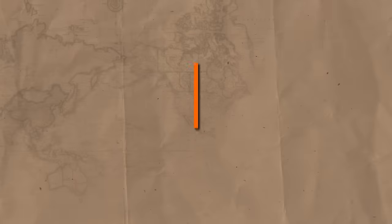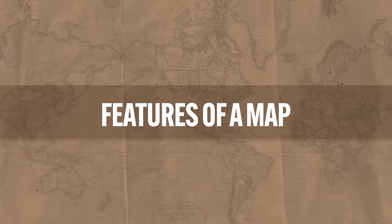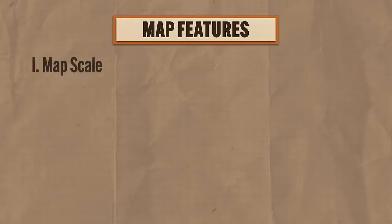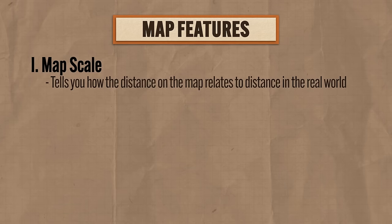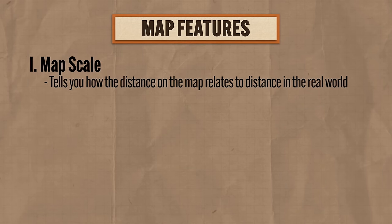Now any map worth its salt is going to have a few common features you need to know. First, you have the map's scale, which tells you how distance on the map relates to distance in the real world. You might see it in a ratio form, or you might see it represented by a bar, but they're both telling you the same thing.